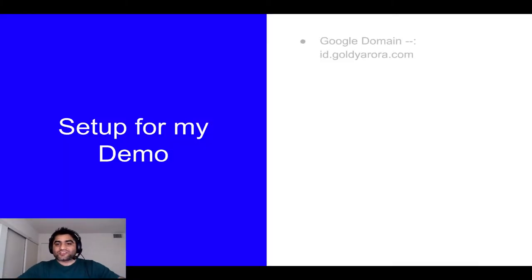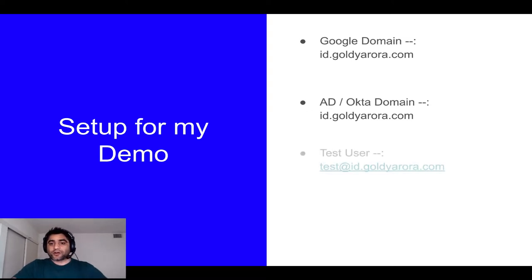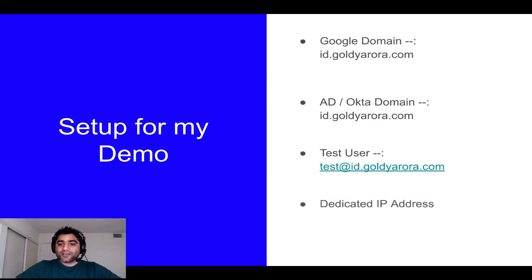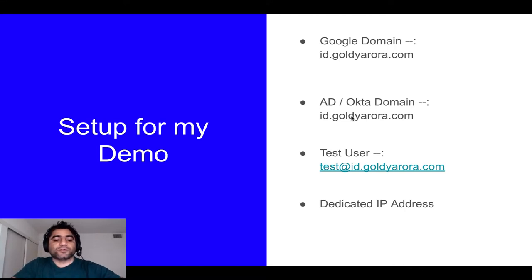Here is the setup for my demonstration. I have my Google domain, which is id.goldearora.com. I also have my domain in AD, which is id.goldearora.com. I have my test user created, which is test@id.goldearora.com, and I also have a dedicated IP address. So with that, let me take you to the Okta and Google Administration consoles and start doing our integration.